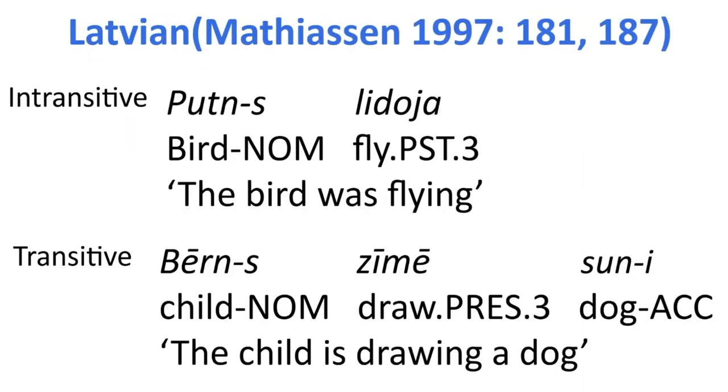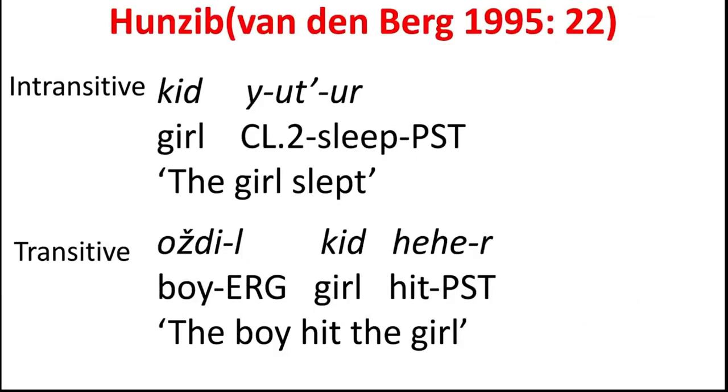Anyways, in Latvian, we can see that the subject and the agent are being treated in the exact same way in the nominative case, while the patient is being marked differently in the accusative case, highlighted here in red. Conversely, we see the opposite pattern in Hunsib, where the subject and the patient are being treated and marked in the exact same way in the absolutive case, while the agent is being marked in the ergative case, highlighted here in blue.